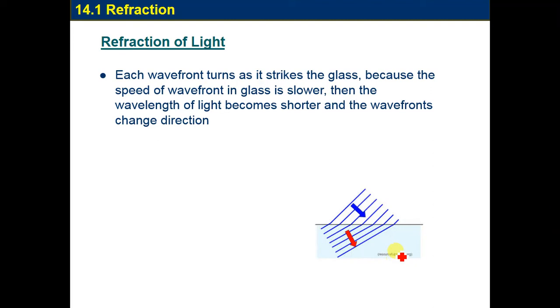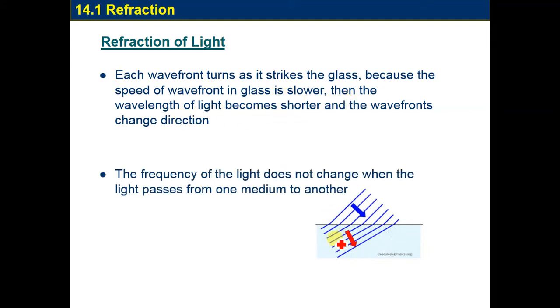So each wavefront turns. Look, this is the wavefront. When it becomes in water, it turns to the right because it slows down, it bends when it strikes the glass or water, because the speed of wavefront in glass is slower. Then the wavelength becomes shorter and the wavefront changes direction.